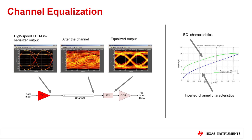An example of ISI, or inter-symbol interference, on high-speed FPD-Link data is shown here. As data traverses the cable, the eye opening is completely closed, as shown by the picture after the channel. An equalizer is then used to compensate for the cable loss by providing an inverse gain function to the signal. In summary, we covered some of the key challenges in transferring high-speed data over cables for an automotive environment, including channel losses and jitter. We also shed some light on some of the techniques used by FPD-Link devices to solve those challenges.